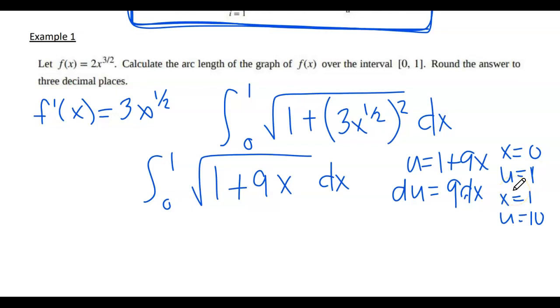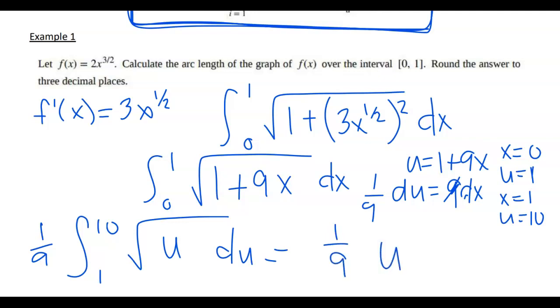So we have the integral from 1 to 10 of square root of u, and then one ninth. So I have one ninth u to the one half, divide by one half, that's the same as multiplying by 2, from 1 to 10.